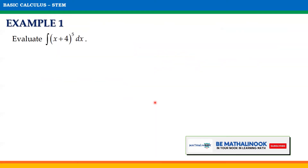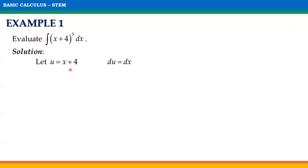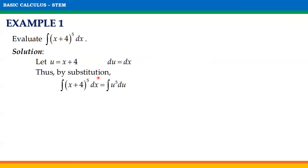With this, let us take some examples. For the first one, let us evaluate the indefinite integral of (x + 4)⁵ with respect to x. For this case, let u = x + 4. Notice that when we get the derivative of x + 4, we will have du = dx. Thus, by substitution, our given integral of (x + 4)⁵ dx will be equal to the integral of u⁵ du. Notice that we have substituted u for x + 4 and du for dx.